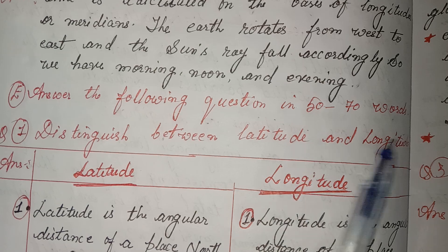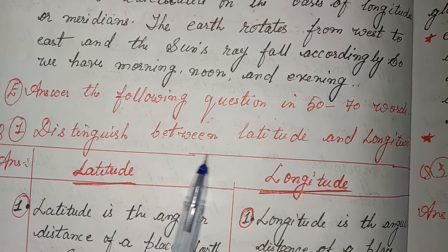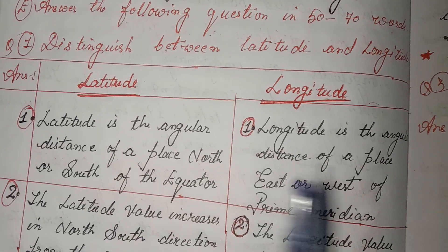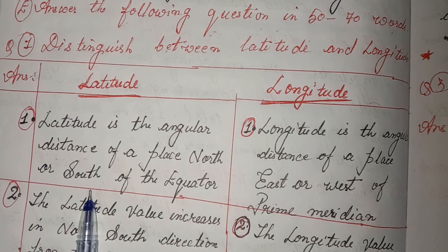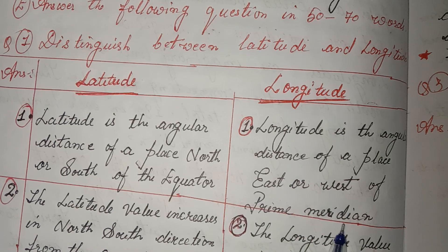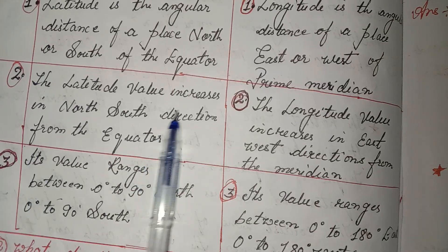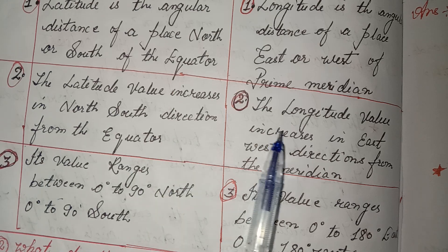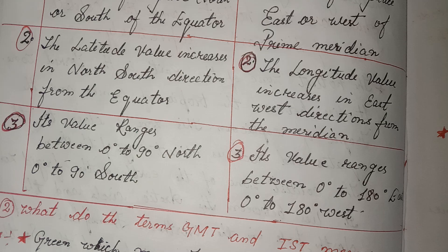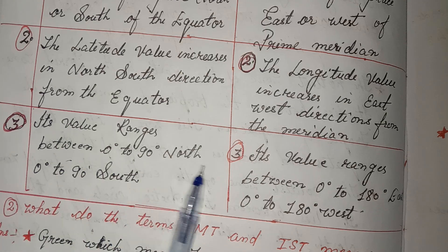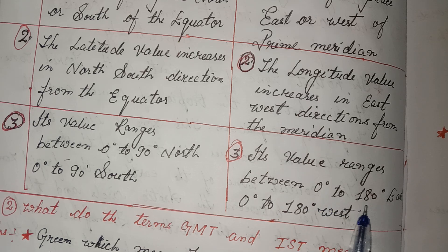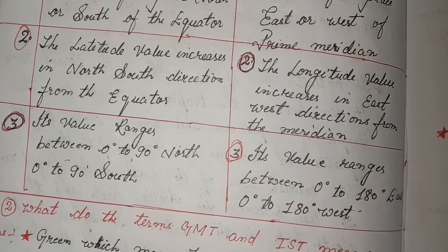Answer the following questions in 50 to 70 words. First: distinguish between latitudes and longitudes. Latitude is the angular distance of a place north or south of the equator. Longitude is the angular distance of a place east or west of the prime meridian. Latitude values increase in the north-south direction from the equator; longitude values increase in the east-west direction from the prime meridian. Latitude ranges from 0° to 90° North and 0° to 90° South; longitude ranges from 0° to 180° East and 0° to 180° West.